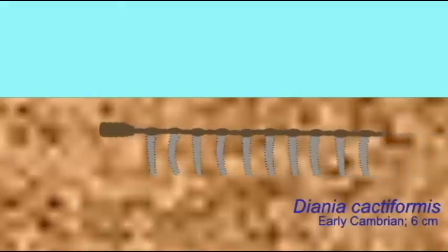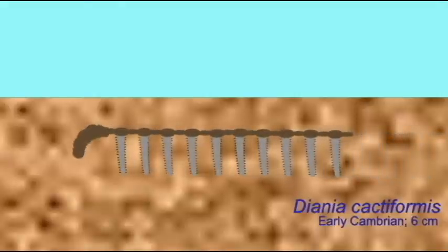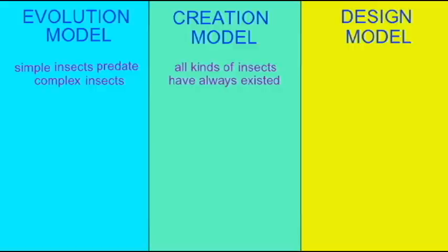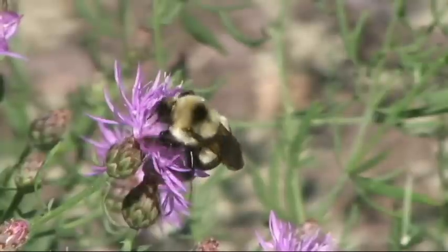The creationist model instead holds that all modern kinds of insect have always existed. So there have always been ants, there have always been bees, there have always been beetles and butterflies, etc.